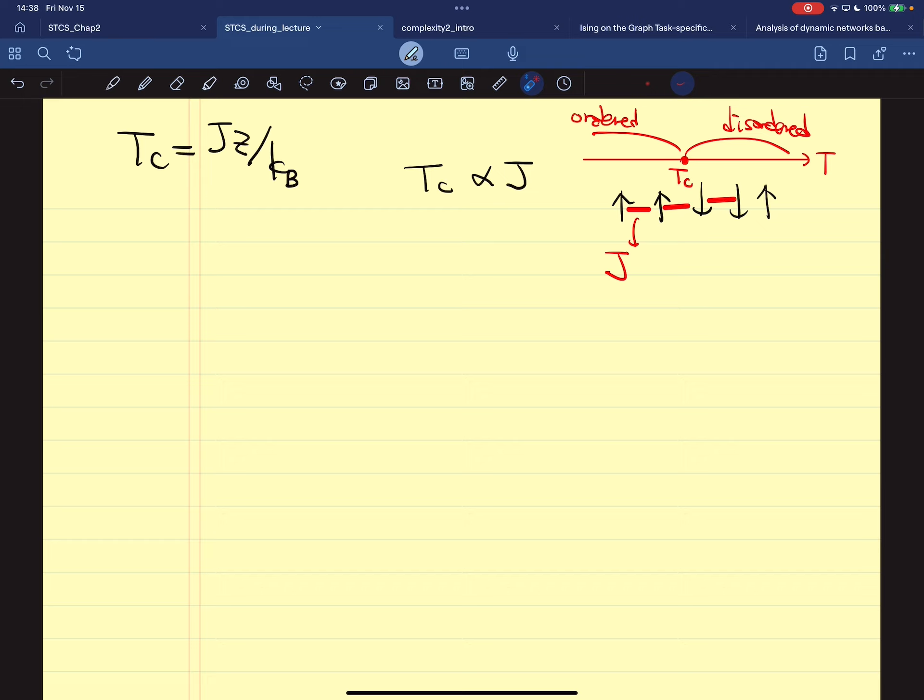The fact that TC is proportional to J means that as these coupling constants become larger and larger, TC becomes larger and larger. This means the range of the ordered phase increases, and the range of the disordered phase decreases.